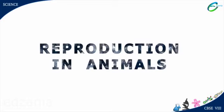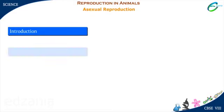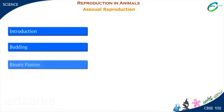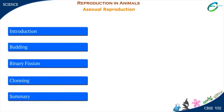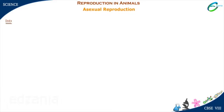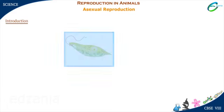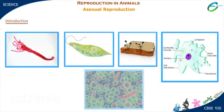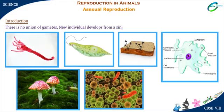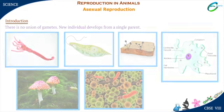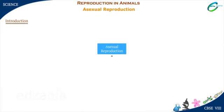Reproduction in Animals. Asexual reproduction is another marvellous process by which animals of lower classes increase their lineage. There is no union of gametes. A new individual develops from a single parent.